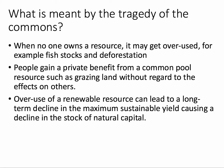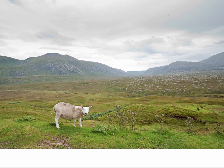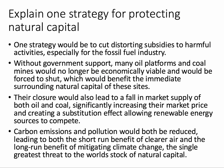People gain a marginal private benefit from a common pool resource — for example, by allowing their sheep or cows to graze on common land — but they may not necessarily think of the impact on others. The key point is that if we overuse a common pool or renewable resource, that can cause a long-term diminution or decline in the maximum sustainable yield from that resource. We call that a decline in the stock of natural capital.